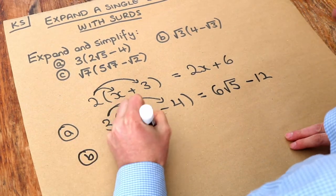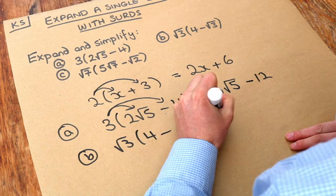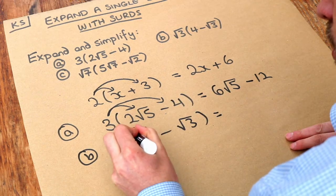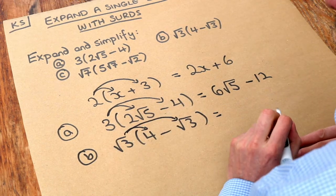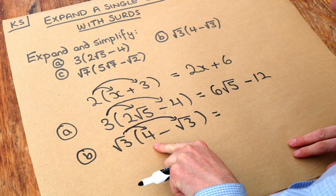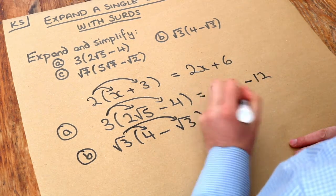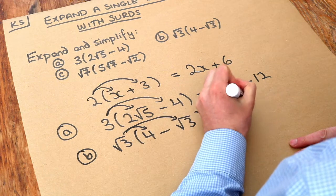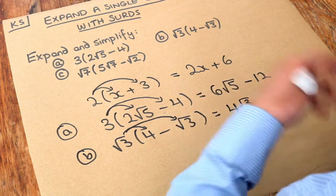Root 3 times 4 minus root 3. We do the root 3 times the 4, the root 3 times the minus root 3. Root 3 times 4. We first put the non-surd so the 4 and then we put the surd root 3. So root 3 times 4 is 4 root 3.